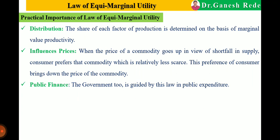In distribution, the share of each factor of production — land, labour, capital, and organization — is determined on the basis of its marginal value productivity. This law also influences prices: when the price of a commodity goes up due to a shortfall in supply, consumers prefer relatively less scarce commodities, which brings down the price of other commodities. In public finance, the government is also guided by this law in public expenditure and spending on public infrastructure.